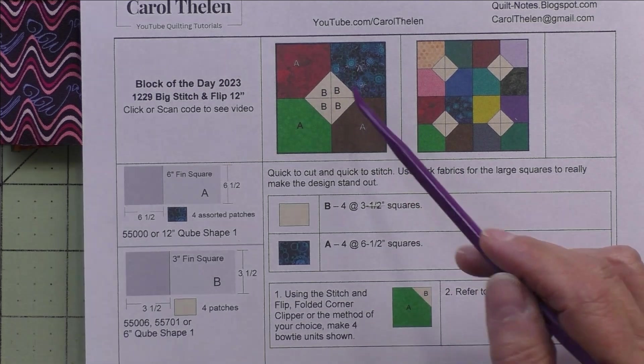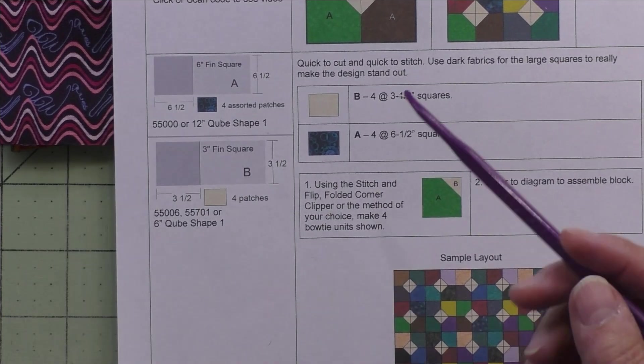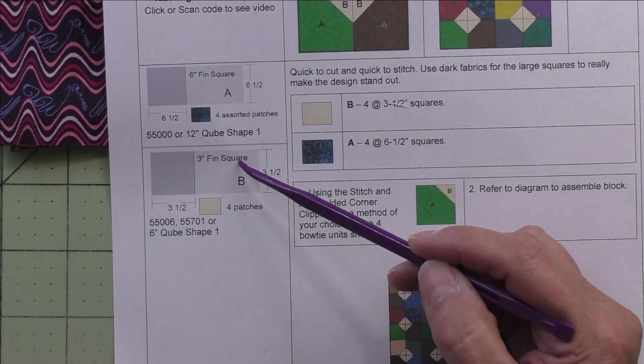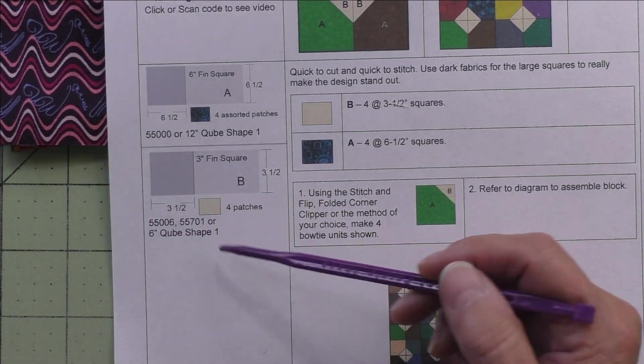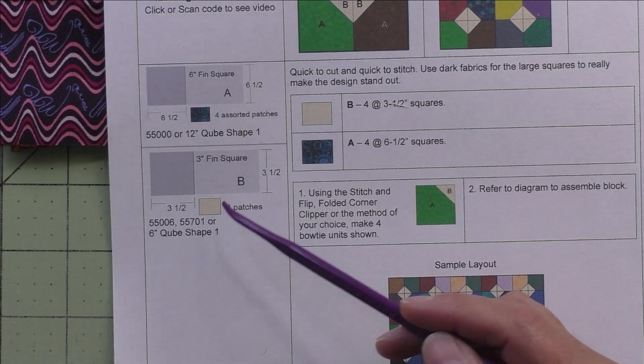Patch B is a three inch finished square - we cut three and a half inch squares and we'll need four patches of the light fabric.